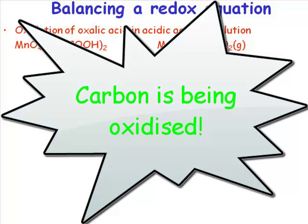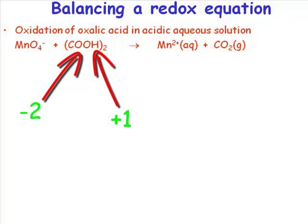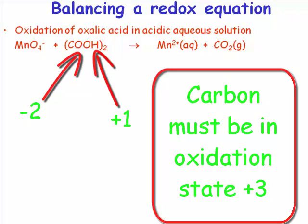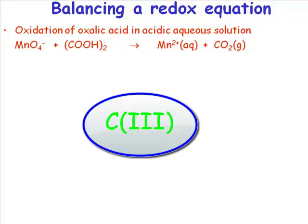If you work out the oxidation state of carbon in oxalic acid: the oxidation state of hydrogen is +1. To balance the charges, you must have carbon in an oxidation state of +3. The carbon in carbon dioxide is in oxidation state +4. So this is clearly a case of carbon being oxidized from oxidation state +3 to oxidation state +4.